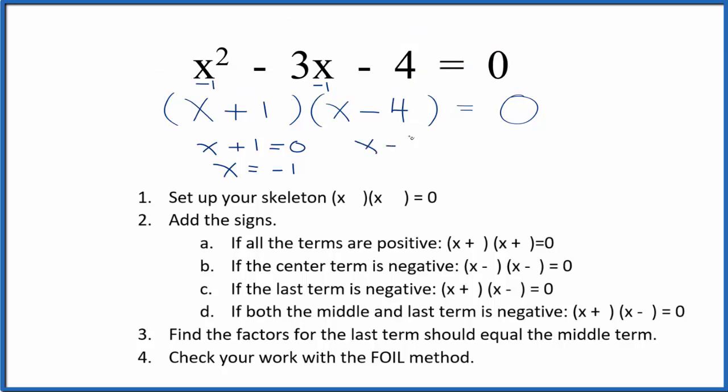Likewise, we could say x minus 4, that equals 0. So x would equal the positive 4 there. So we could put 4 in for x here. 4 squared minus 3 times 4 minus 4. All of this, again, will equal 0. So these are the solutions to our equation here.